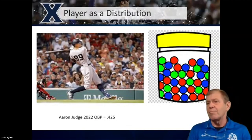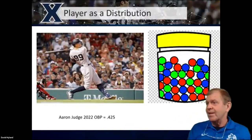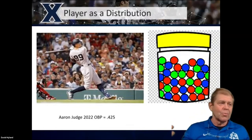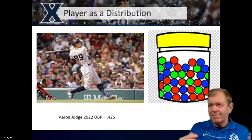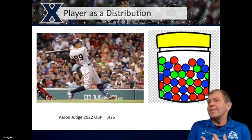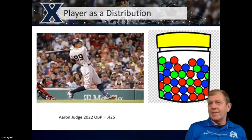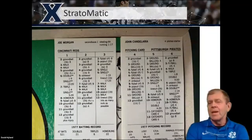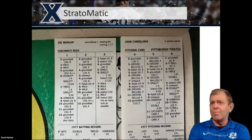If we think about the player as a distribution, I've got an image of a jar of marbles. In any particular at bat, I reach into the jar — if I pull out a red marble, that's an out; green marble, that's a single; blue marble, that's a home run. Players obviously are not distributions, but when we start to use these statistical concepts, that's essentially the way we want to think about it. It might be too simple to think about the player all by himself as a distribution.